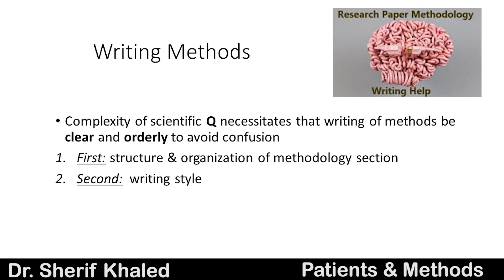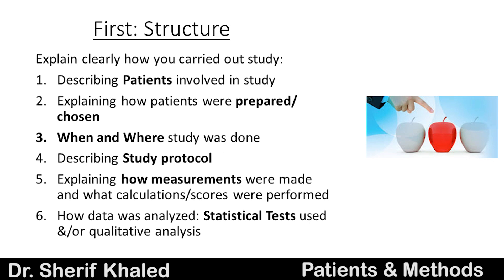The complexity of the scientific question means writing methods must be clear and orderly to avoid confusion. The structure covers: clearly explaining how the study was carried out, describing the patients involved, explaining how patients were prepared or chosen, stating when and where the study was done, describing the study protocol, explaining how measurements were taken, what calculations or scores were performed, and how data was analyzed — including statistical tests or quantitative analysis.